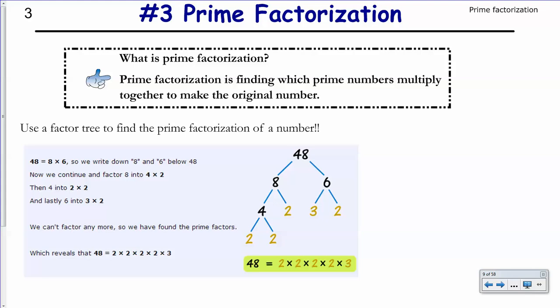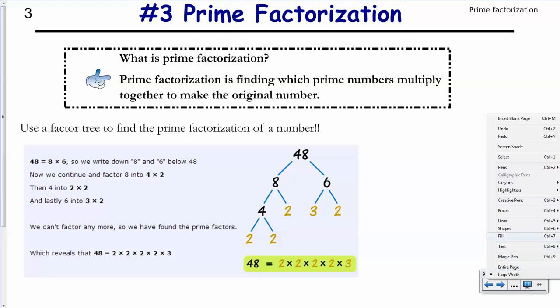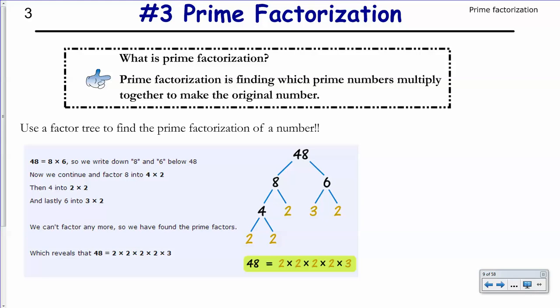So here's our example. We want to find the prime factorization of, let's say, the number 48. So I start with the number 48. I use factors to break it apart. So I can use the first one that comes off the top of my head is 8 times 6 equals 48. So I write an 8 down and a 6 down. Can 8 be broken apart again?